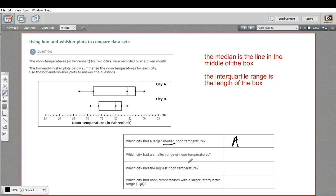The next one says, which city had a smaller range of noon temperatures? So the range, not the interquartile range this time, but the range is from the smallest to the greatest. So whichever one of these is shorter is going to have a smaller range.